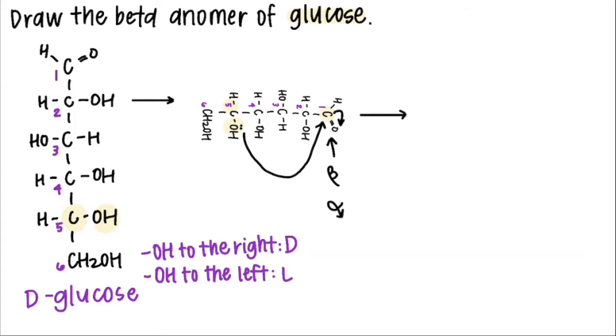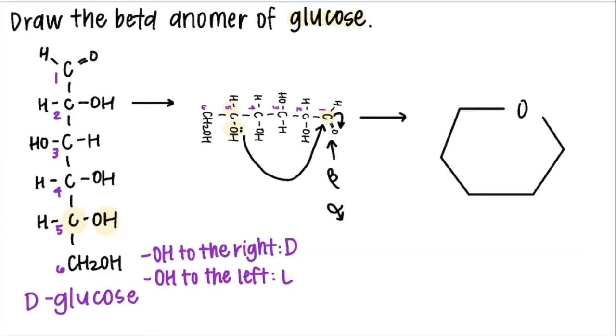Next we make the ring. Since the nucleophilic attack included the oxygen in carbons one through five, this is going to be a six-membered ring or a pyran.